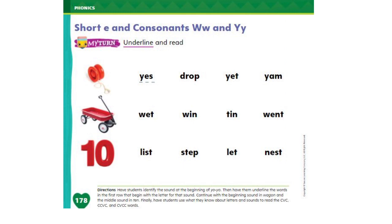Now let's check what we have learned and do this exercise together. On page number 178 in your MyView K2 books, you will have this page for short E and consonants W and Y. We have to read the words and underline some of them. Okay, look at the first picture — this is a yo-yo. We need to read the words and underline the ones that begin with the same sound as yo-yo. The first one is already done for you.